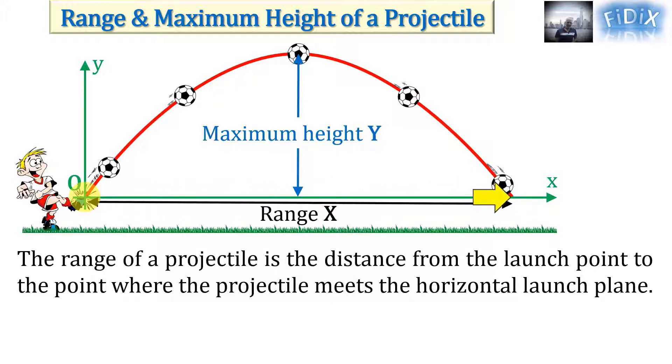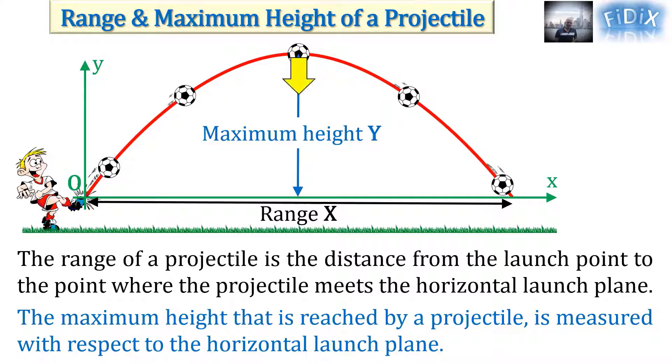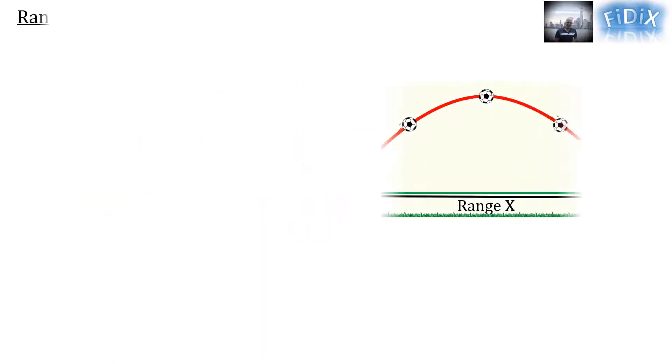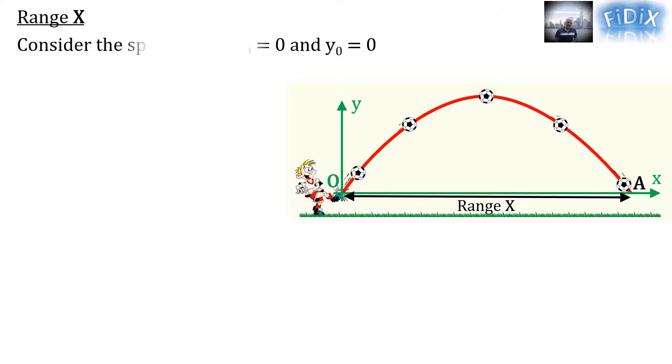And the maximum height that is reached by a projectile is measured with respect to the horizontal launch plane. Now let's find the range OA, denoted by uppercase X, of the projectile in the special case where the launch point coincides with the origin O of the frame of reference. The coordinates of point A where the projectile meets the horizontal launch plane are X and zero.